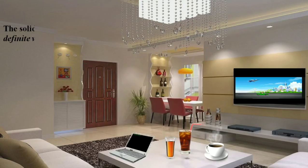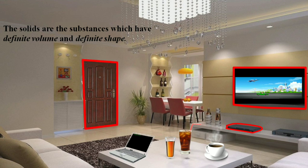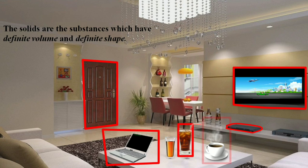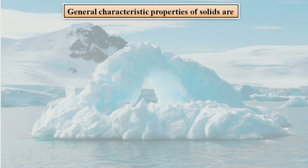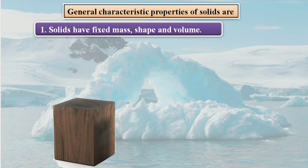We know that solids are nothing but substances which have definite volume and definite shape. For example, consider your house — the TV, video player, doors, laptop, this glass, or coffee cup — all these come under solids because they have definite shape and definite volume. Now, general characteristic properties of solids: solids have fixed mass, shape, and volume.